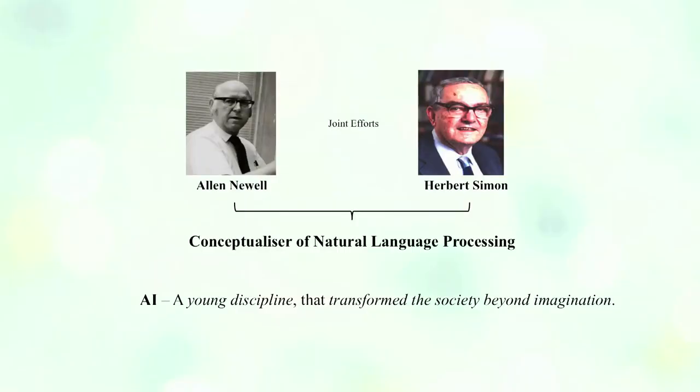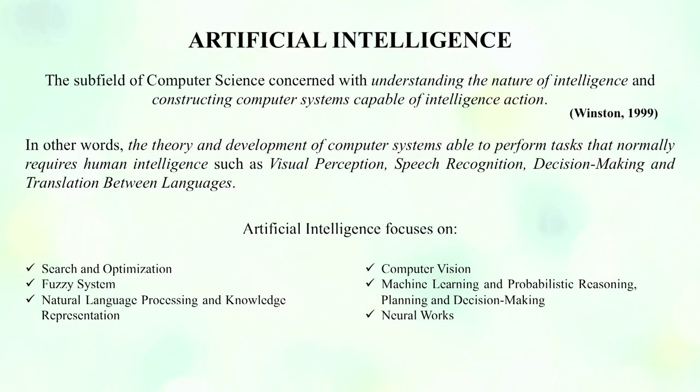In 1956, two great legends in computer science came into the picture: Alan Newell and Herbert Alexander Simon. Alan Newell was a theoretical computer expert, mathematician, and logician. Herbert Simon was an American politician, economist, theoretician, and management scientist. Jointly they developed a system for artificial intelligence known as natural language processing, for which the ACM awarded them the ACM Turing Award in 1975.